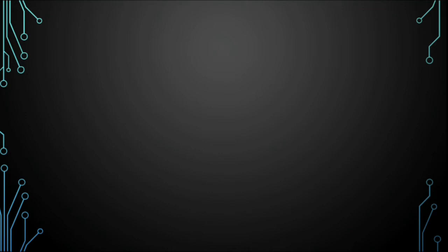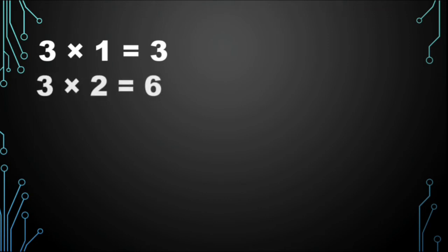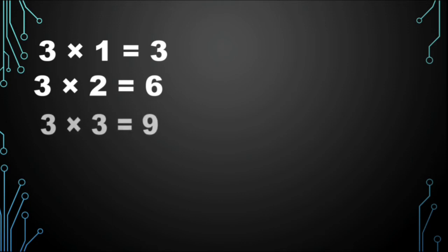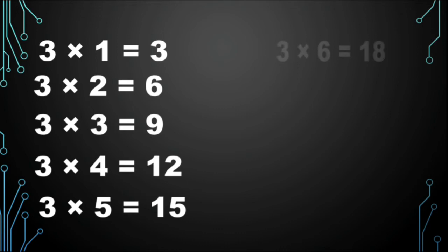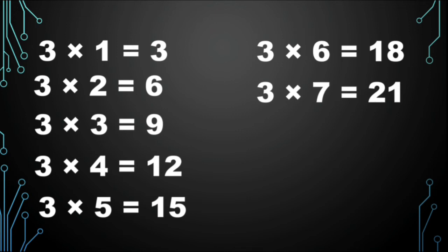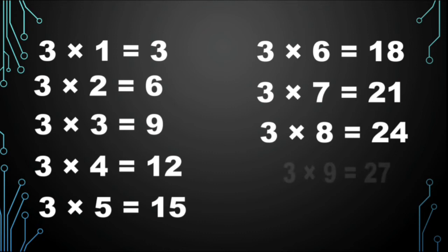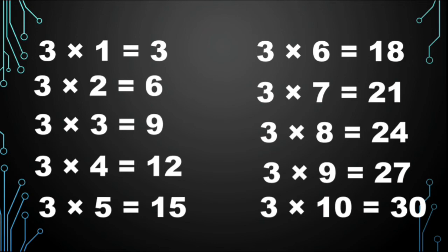Let's learn the table of 3 one more time. 3 1s are 3, 3 2s are 6, 3 3s are 9, 3 4s are 12, 3 5s are 15, 3 6s are 18, 3 7s are 21, 3 8s are 24, 3 9s are 27, 3 10s are 30.